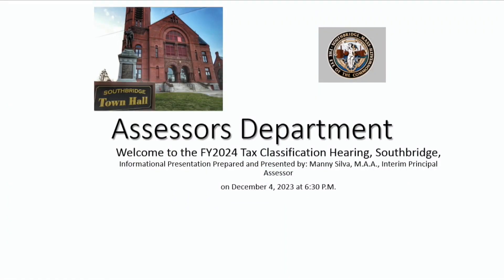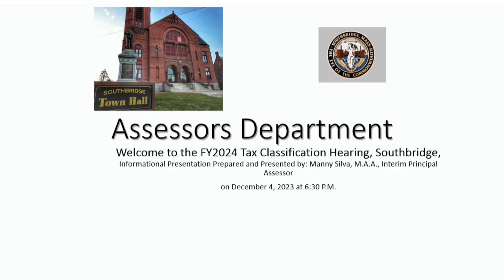Good evening, everyone. I'm Manny Silva, the interim assessor. The board has developed some values and we actually submitted them to the Department of Revenue. All our values are certified and we're good to go. Now we just have to present the council with some of the options before you. You actually have three options. You have an option of splitting the tax rate between residential and commercial and developing a minimal residential factor. The minimal residential factor will be the least amount that you could actually tax residents, and it's calculated to be approximately 88.28%.